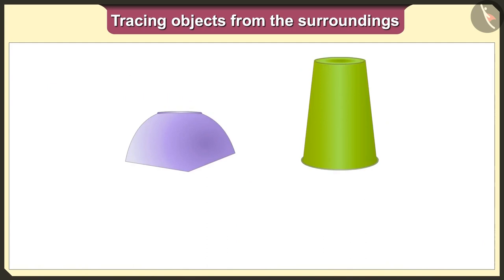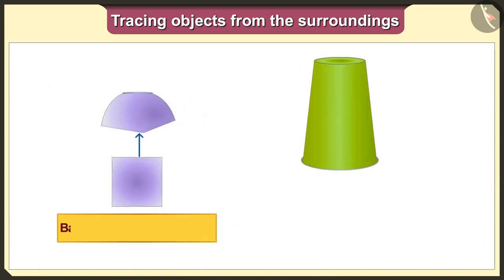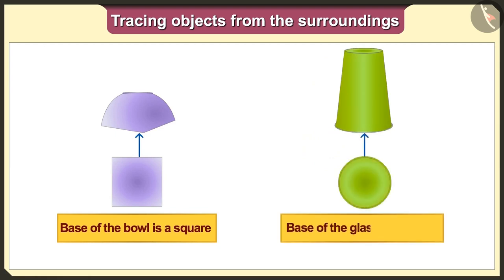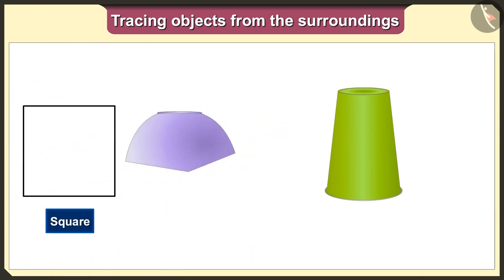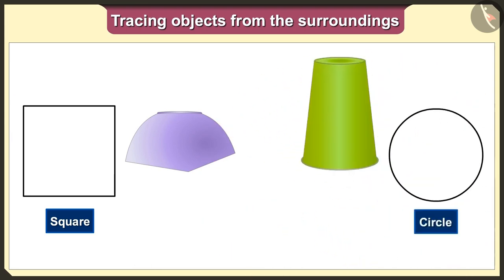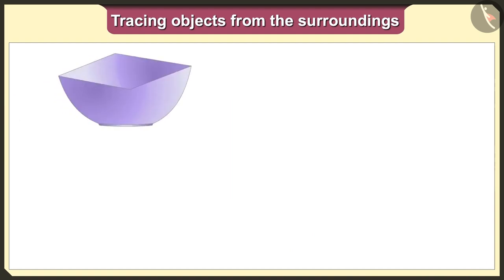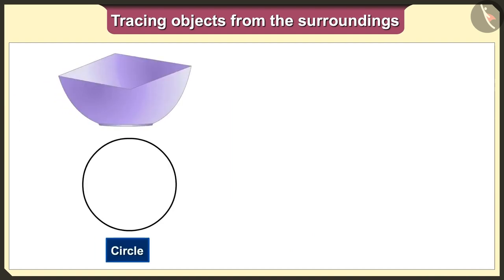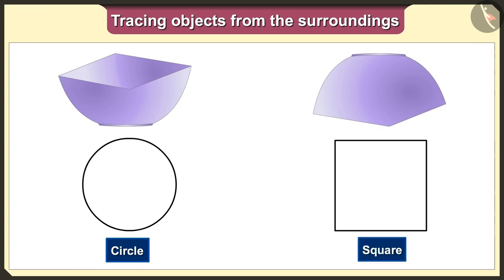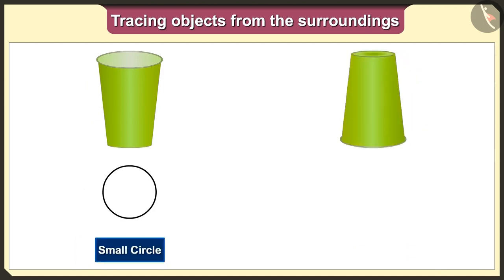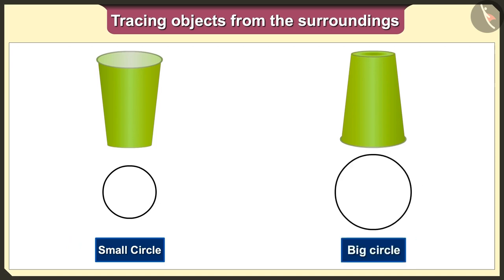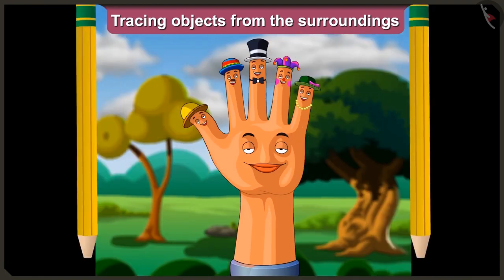Now if we keep the bowl and glass upside down, the base of the bowl is a square and the base of the glass is a circle. If we keep the bowl facing downward and trace it, we will get the square shape. If we keep the glass facing downward and trace it, we will get the circle shape.